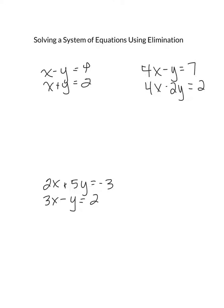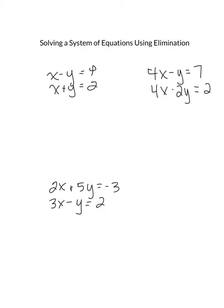In the first example, if you add the two equations together, you're going to notice that you have x plus x gives you 2x, and then you have a negative y and positive y.